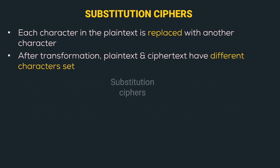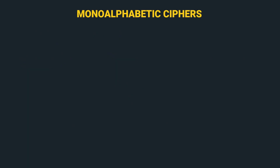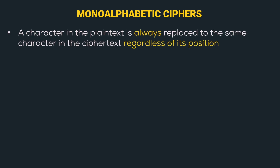From the previous slide, we can recollect that substitution ciphers are classified into two types: monoalphabetic ciphers and polyalphabetic ciphers. Let's understand each of these properly, starting with monoalphabetic ciphers.